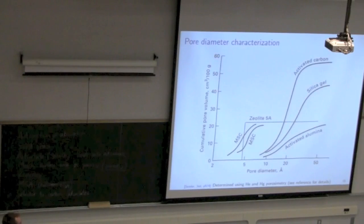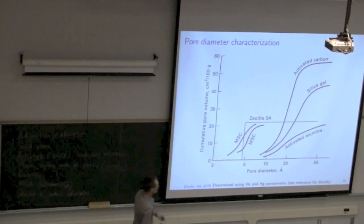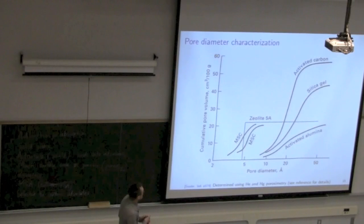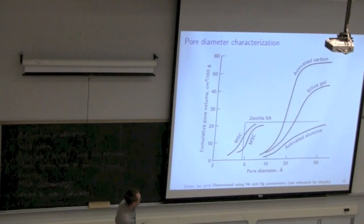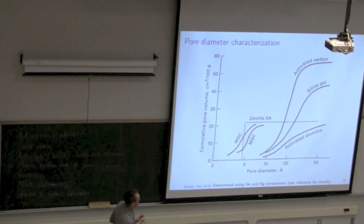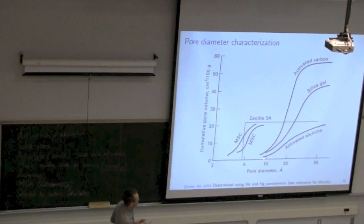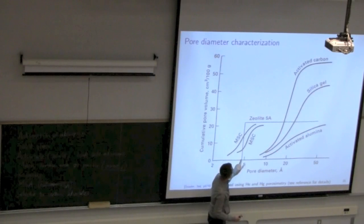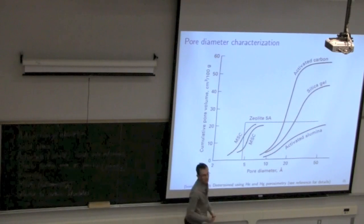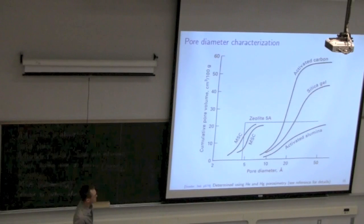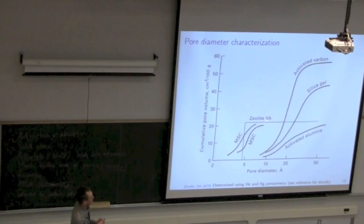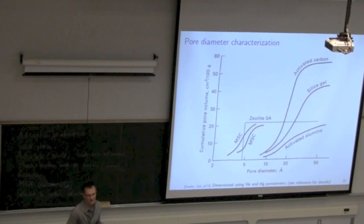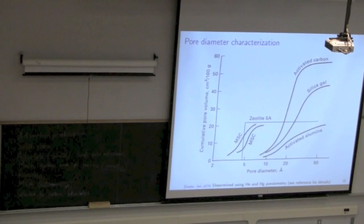We can use helium and mercury porosimetry to determine the cumulative pore volume. The key point is that activated carbon, silica gel, and activated alumina all have a range of pore diameters, whereas zeolites have adsorption occurring at a very single, specific pore diameter — a very precise size. Zeolites are named according to their pore sizes: zeolite 5A, 3X, 3A — various naming conventions reference those cage sizes.